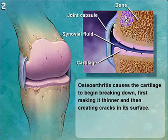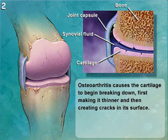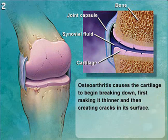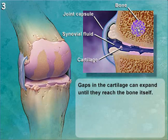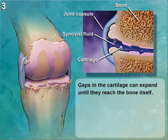Here we can see bone, joint capsule, synovial fluid, and cartilage. Osteoarthritis causes the cartilage to begin breaking down, first making it thinner and then creating cracks in its surface. Gaps in the cartilage can expand until they reach the bone itself.